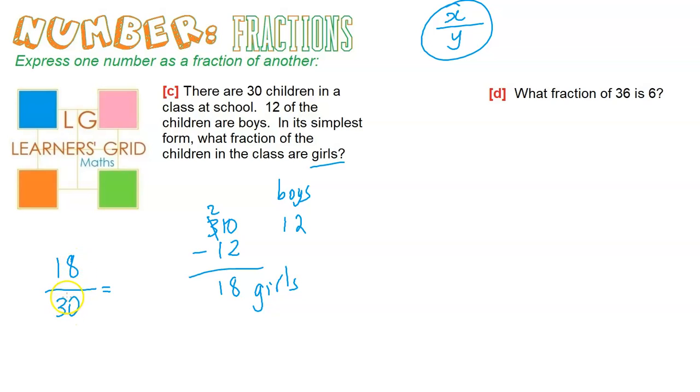So if I divide by six, whatever I do to the top I've got to do to the bottom. That gives me three, and this gives me 30 divided by six is five. So three out of five is the final answer.